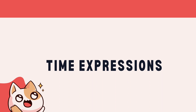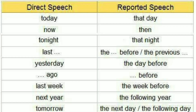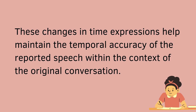Section 6: Time expressions. Time expressions play a crucial role in indicating when an action or statement occurred in indirect speech. Here are some common changes when converting from direct to indirect speech: 'now' becomes 'then'; 'today' becomes 'that day' or 'the same day'; 'tomorrow' becomes 'the next day'; 'yesterday' becomes 'the day before' or 'the previous day'; 'last week/month/year' becomes 'the previous week/month/year'; 'next week/month/year' becomes 'the following week/month/year'; 'soon' remains 'soon'; 'tonight' becomes 'that night.' These changes help maintain the temporal accuracy of the reported speech within the context of the original conversation.